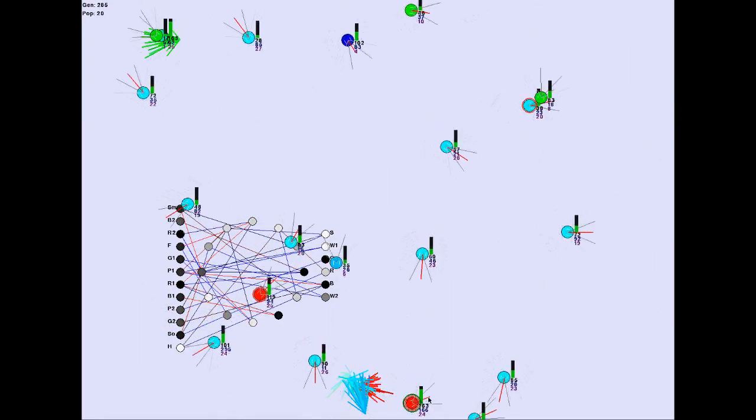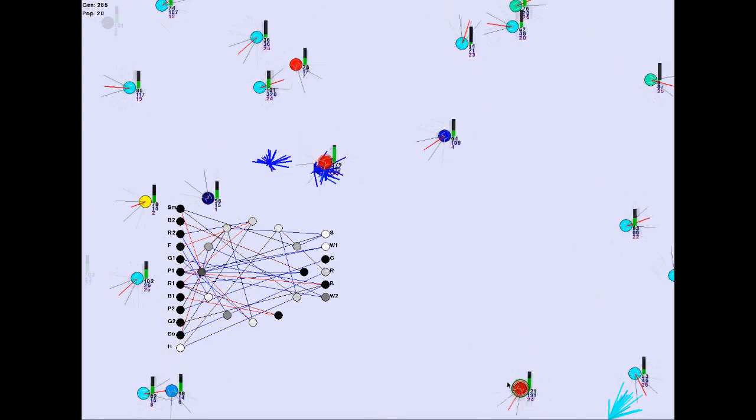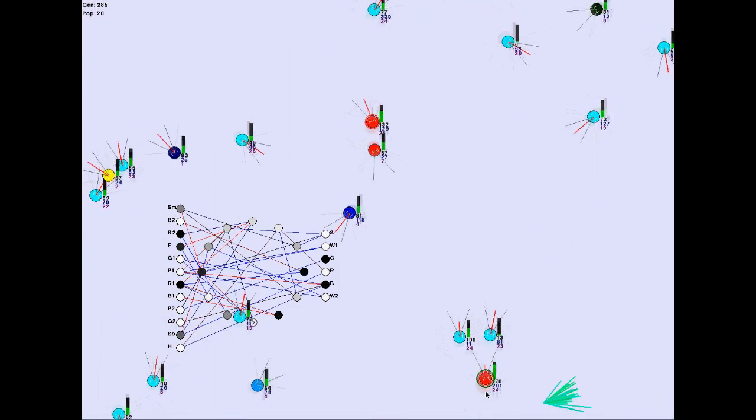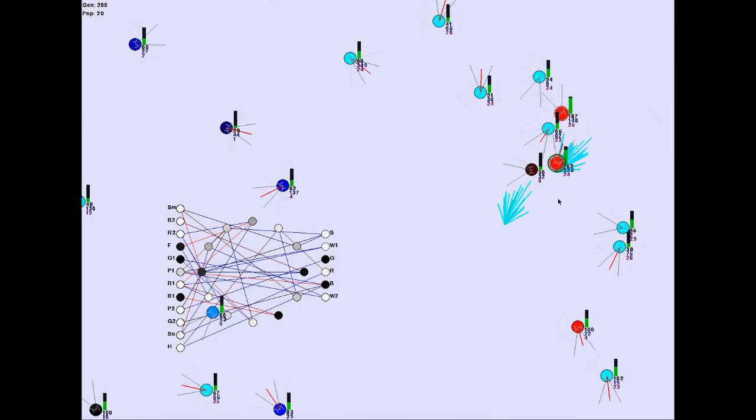The red bot on the bottom right of this video developed an interesting strategy for killing other bots. It turns around on spot until it sees some enemy and dashes forward to kill it. Unfortunately, it also likes to feast on its own babies and is eventually driven to extinction.